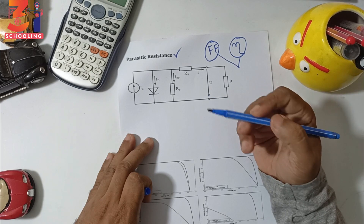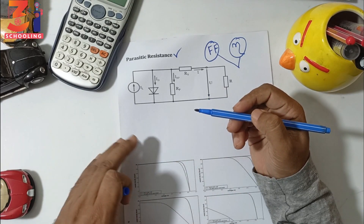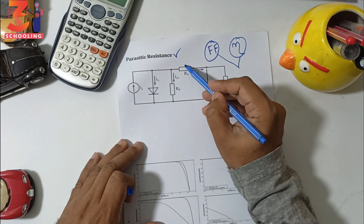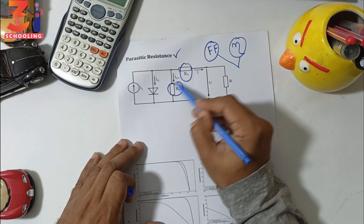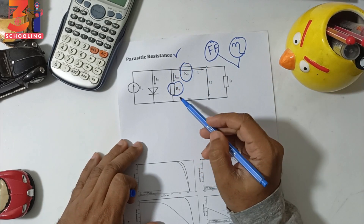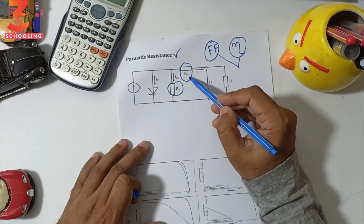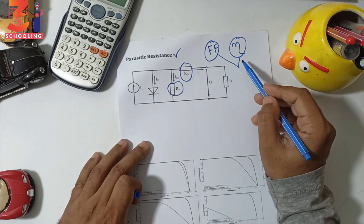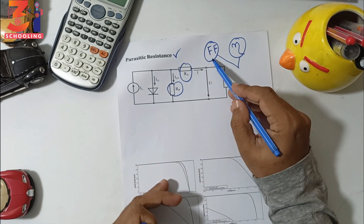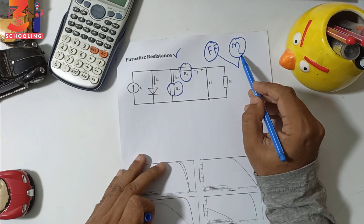This is the solar cell fill factor. The photovoltaic equivalent circuit — above the equivalent circuit — has parasitic resistances. High parasitic resistance affects the series resistance and shunt resistance, which reduce the efficiency and fill factor of the solar cell.